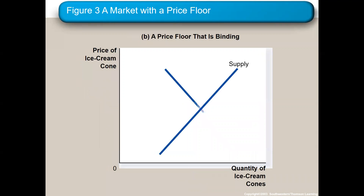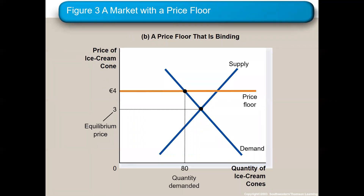For the price floor on the upside down house to be binding, it has to be above the equilibrium. Anything above the equilibrium will create a surplus. Notice we're supplying 120 and selling 80, creating a surplus of 40. We're trying to help the ice cream industry by putting in this binding price floor, but you can notice that they're selling less than they did before. So you have the surplus here with a binding price floor.